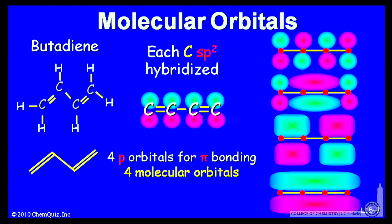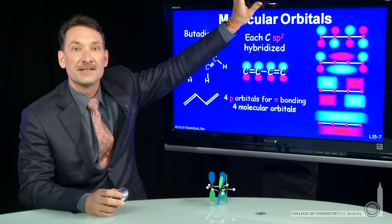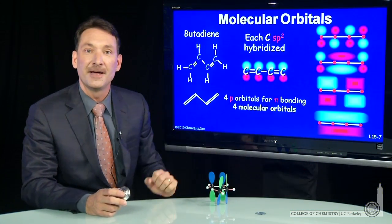When you get to these long, delocalized orbitals, it's not as clear which is the pi bonding and which is the antibonding orbital. So we'll just take the upper half as antibonding and the lower half as bonding.